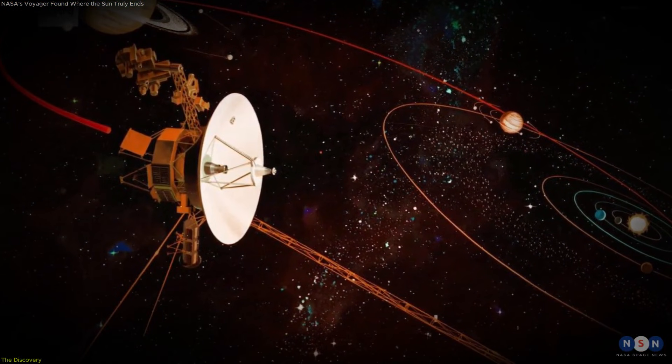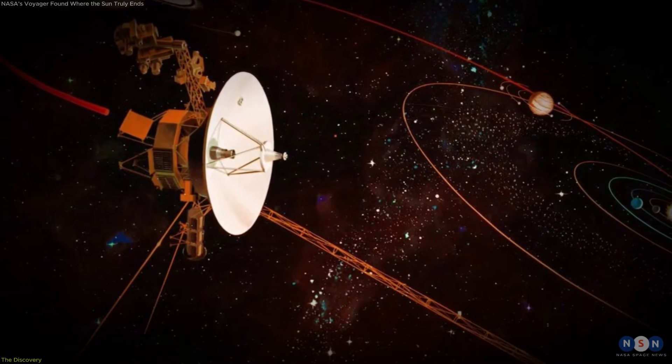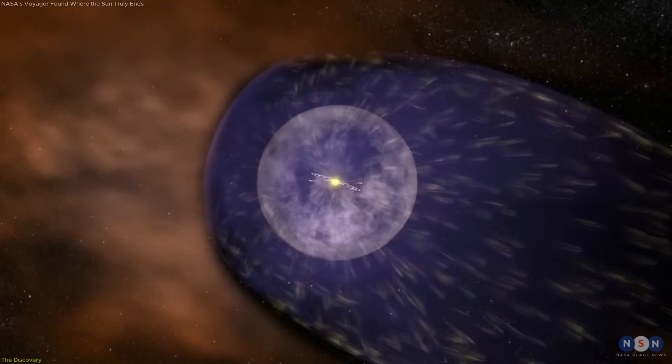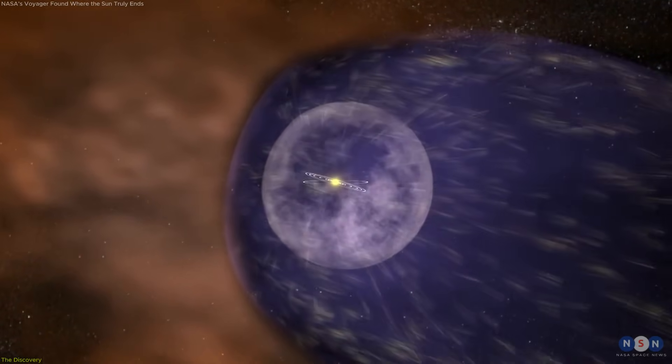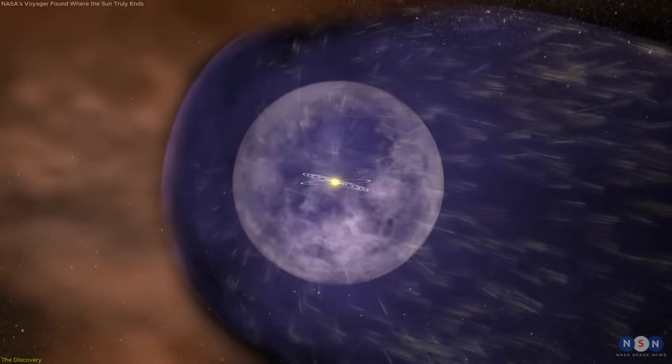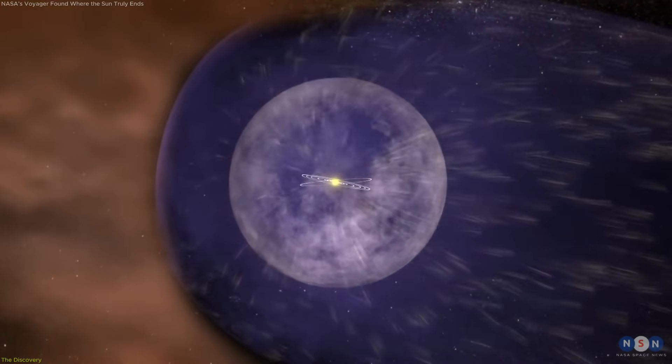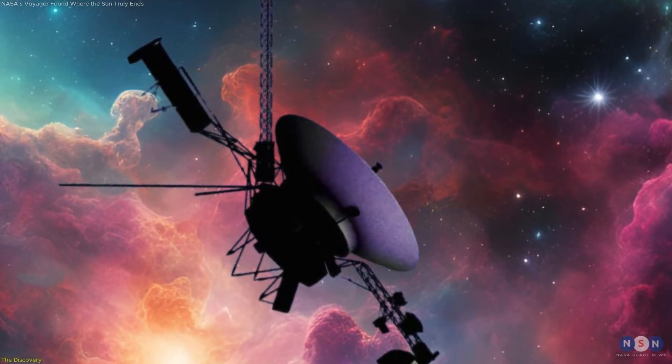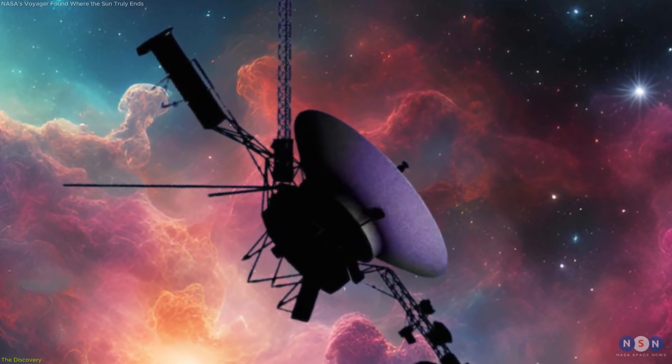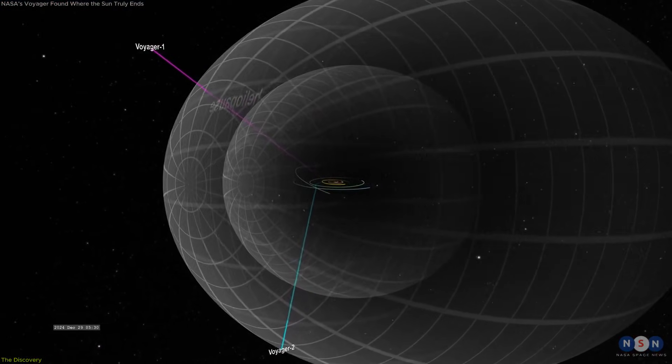What made these crossings especially important was not just that they happened, but what they revealed about the nature of the boundary itself. Scientists had expected a wide, chaotic transition region, where solar and interstellar particles would mix gradually. Instead, Voyager detected a relatively narrow zone where conditions changed quickly and decisively.